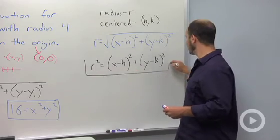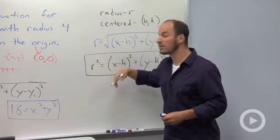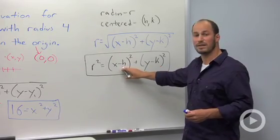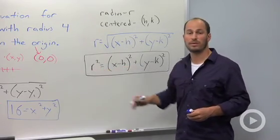This is the general equation for a circle. By looking at it, we can determine the center and the radius.